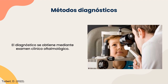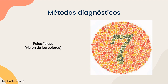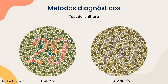Continuando con los métodos diagnósticos, el diagnóstico principalmente se obtiene mediante un examen clínico oftalmológico. También encontramos pruebas psicofísicas que involucran la visión de los colores. Por ejemplo, el test de Ishihara, el cual consiste en mostrar al paciente una serie de láminas con lunares de distintos colores que forman números. En este caso, aquí podemos ver que se forma un 29, pero una persona con protanopía va a observar un número diferente, y así es como se puede diagnosticar.